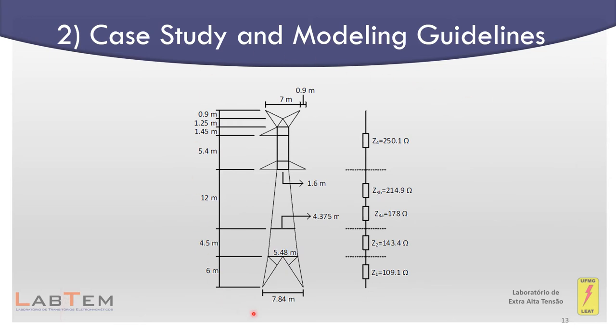On the left it is represented the anchor tower geometry and the ATP tower model on the right. The same modeling principle used for suspension structures was adopted due to the similarity between the towers. 30 of the 220 structures are anchor towers.